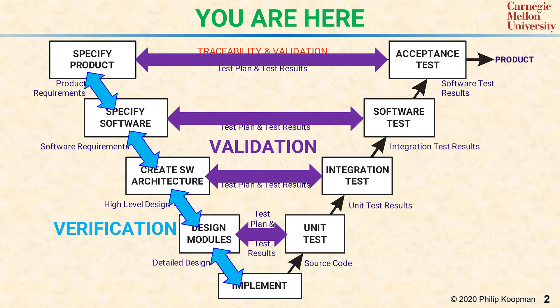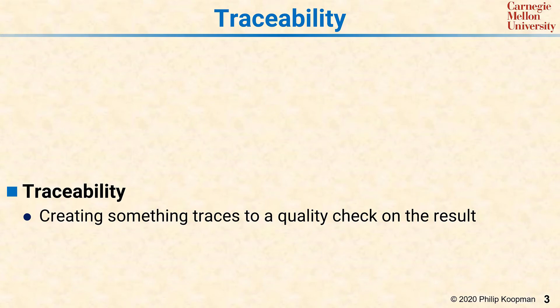And there's validation, which means that the various types of tests actually ensure that the things on the left-hand side of the V were accomplished the way they were supposed to be. The general idea of traceability is that when you have more than one artifact — a piece of software, a design document, or something like that — within a development process, you want to compare the different artifacts to each other to do checks and balances and make sure you didn't get anything wrong.